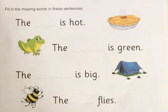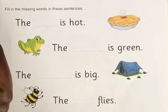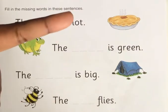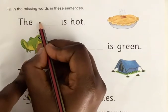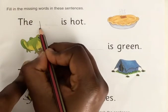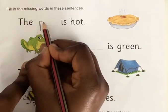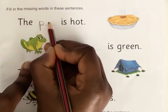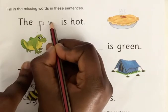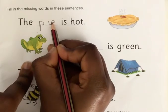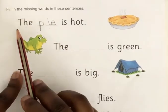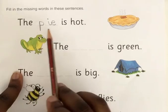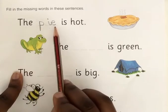Pie — pie. So you are going to write "pie" in the blank space. Let's read the sentence now: the pie is hot.